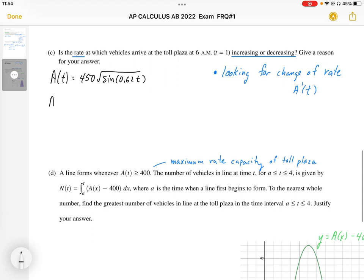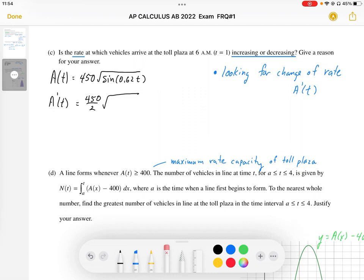So differentiating this, I get a prime of t equals, I'm going to differentiate the square root. So this becomes sine to the power of negative one-half. I'm just going to clean this up a bit.